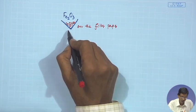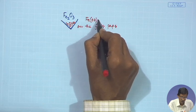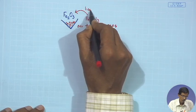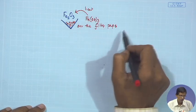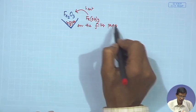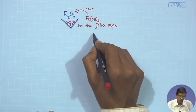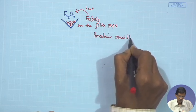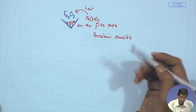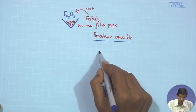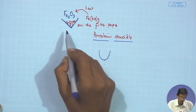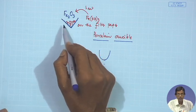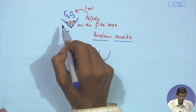The conical-shaped filter paper in the funnel holds the mass of ferric hydroxide. We want to go for the conversion Fe(OH)₃ → Fe₂O₃ through heat. The filter mass of ferric hydroxide on the filter paper must be transferred to the porcelain crucible — you fold the wet filter paper along with the ferric hydroxide and transfer it into the porcelain crucible.